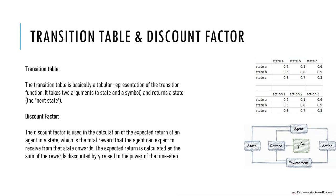First of all is the transition table, also called the transition model. It determines the probability of moving from one state to another state after taking a particular action. For example, in a game of chess, the transition model would specify the probability of moving from one board position to another after making a particular move.